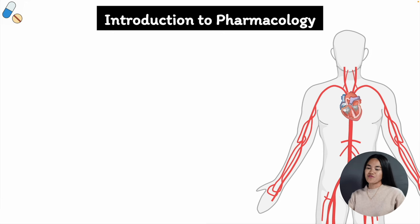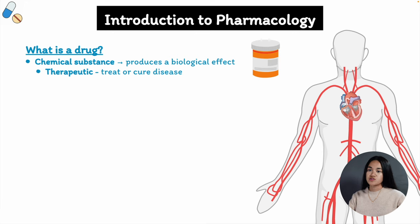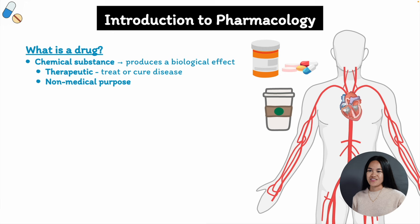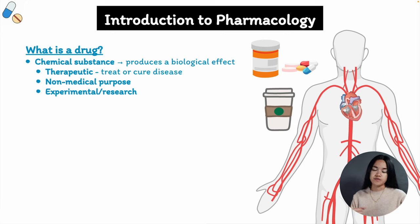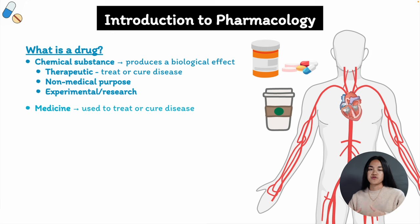So first of all, what is a drug? In pharmacology, a drug is a chemical substance that when administered to a living organism produces a biological effect. Drugs can be used for therapeutic purposes to treat diseases, or they can be used for non-therapeutic purposes such as recreational or experimental use. This also includes the caffeine in your coffee, and it includes experimental tools used in researching diseases or finding new therapeutic treatments. Medicine is what we usually refer to as a drug that is used to treat, cure, or alleviate a disease's symptoms — these are what we refer to as therapeutic drugs or therapeutic agents.